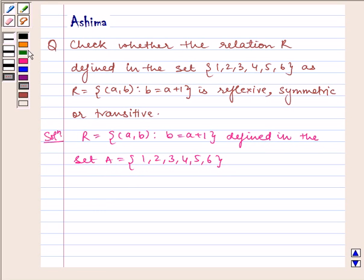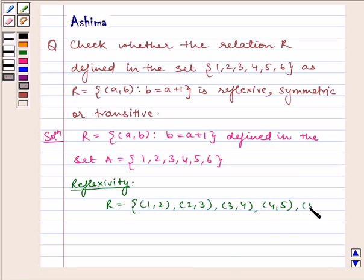Now let us check for reflexivity. We have the relation R = {(1,2), (2,3), (3,4), (4,5), (5,6)}.